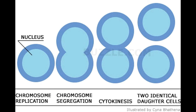After binary fission is over, the outcome is two genetically identical daughter cells. Under favorable environmental conditions, each of these cells grow and develop into matured cells. Speaking about binary fission examples, you can go through organisms that reproduce asexually. Though there are several methods of asexual reproduction, like budding, fragmentation, etc., binary fission is a common type in the majority of unicellular organisms.